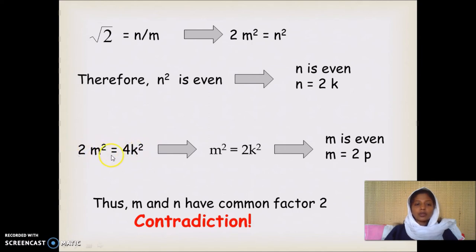If you cross 2 with 4, we get m squared equal to 2k squared. Now what can we conclude from this? 2k squared is an even number. That means m squared is an even number.